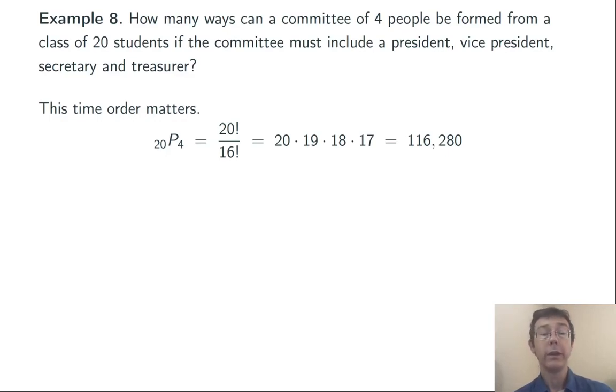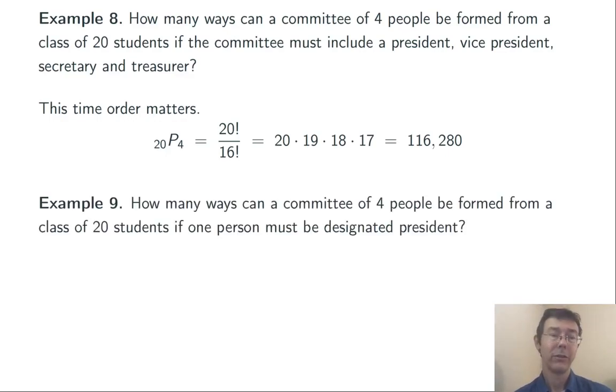Now, we get 20 times 19 times 18 times 17. 116,280. By the way, notice that 20 permute 4 was larger than 20 choose 4. That'll always be the case. There's more possible orderings than choices.